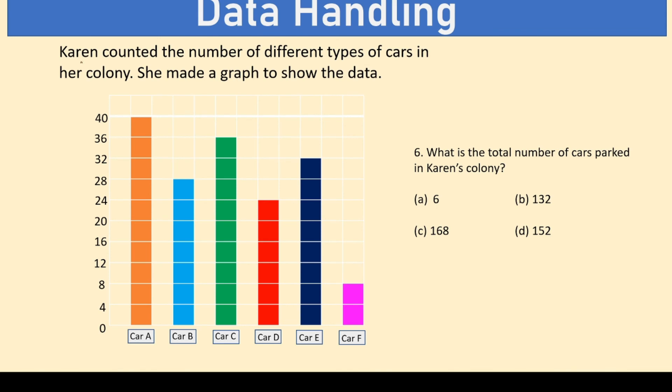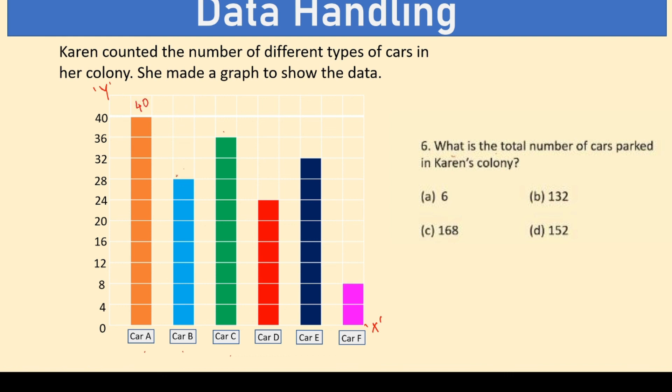Karen counted the number of different types of cars in her colony. She made a graph to show the data. Now, in this graph, there are two axes. The vertical axis is called the y-axis. And the horizontal axis is called the x-axis. Now, along the x-axis is defined the types of cars. And on the y-axis is the number of those cars. What do we need to find? What is the total number of cars parked in Karen's colony? Now, to get the total number of cars, all we need to do is sum up all of these bar totals. So, car A, the number of cars is 40. For car B, the number of cars is 28. For car C, the number of cars is 36, is 24. For car E, the number of cars is 32. And for car F, the number of cars is 8. Now, let's sum up.